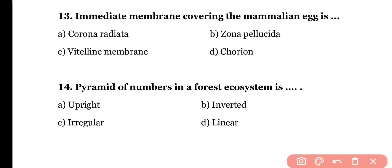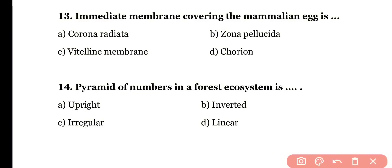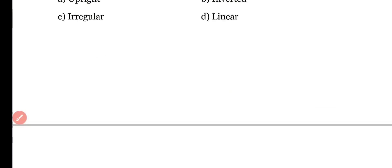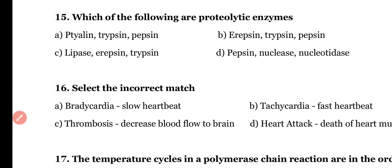Question number fourteen: the pyramid of numbers in a forest ecosystem is (a) upright, (b) inverted, (c) irregular, or (d) linear. The correct answer is option B — the pyramid of numbers in a forest ecosystem is inverted.